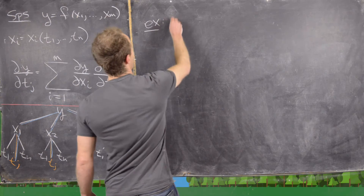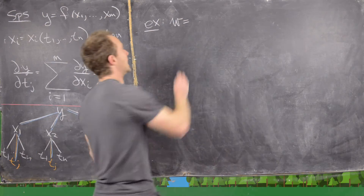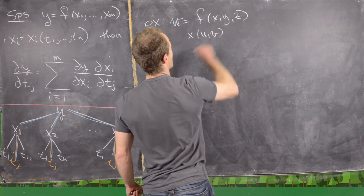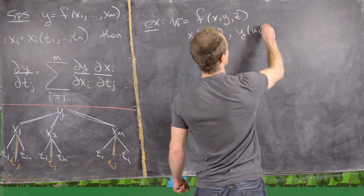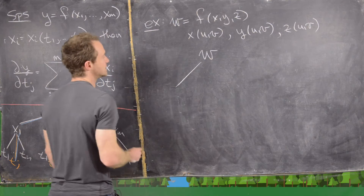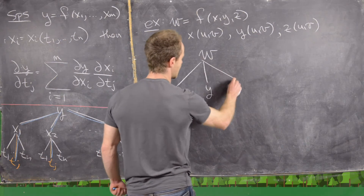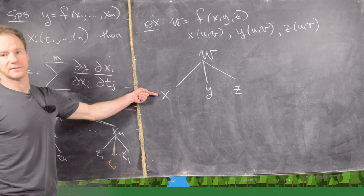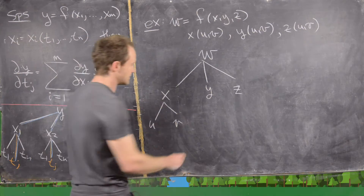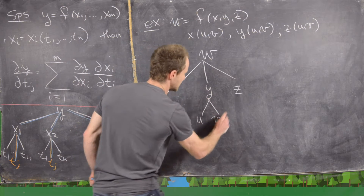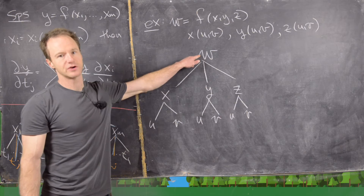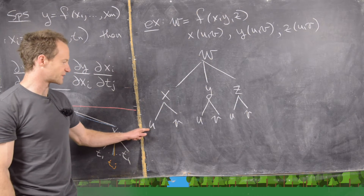Let's take a smaller example. Say we have dependent variable w as a function of x, y, and z, and x, y, and z are all functions of u and v. So x is a function of u and v, y is a function of u and v, and z is a function of u and v. We can make our tree diagram: w depends on x, y, and z as intermediate variables, and each of these intermediate variables depends on independent variables u and v.